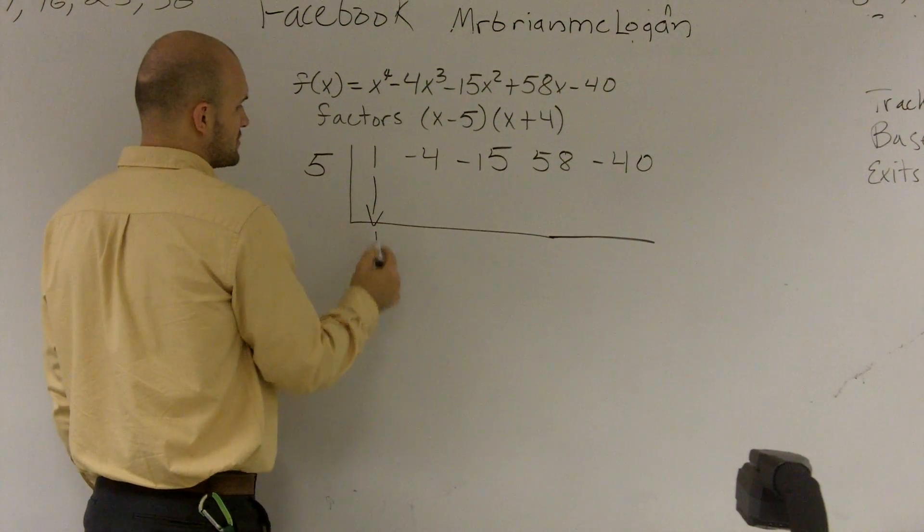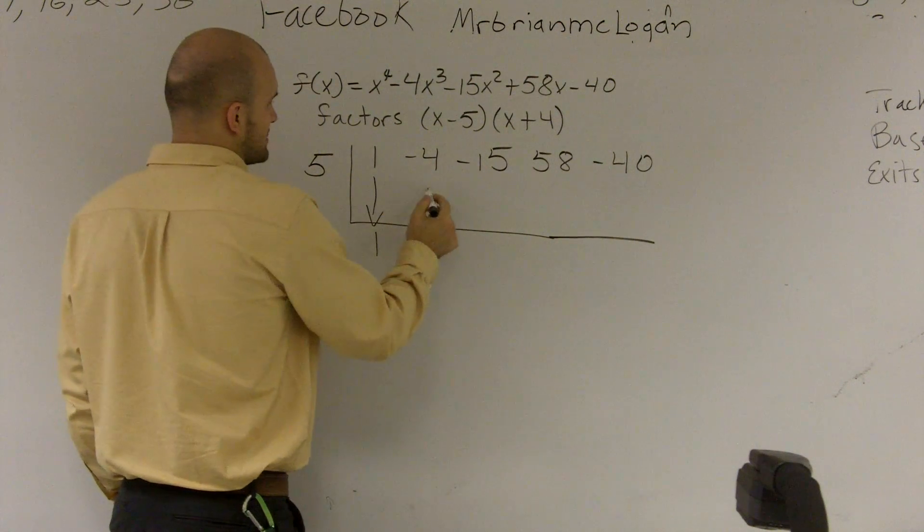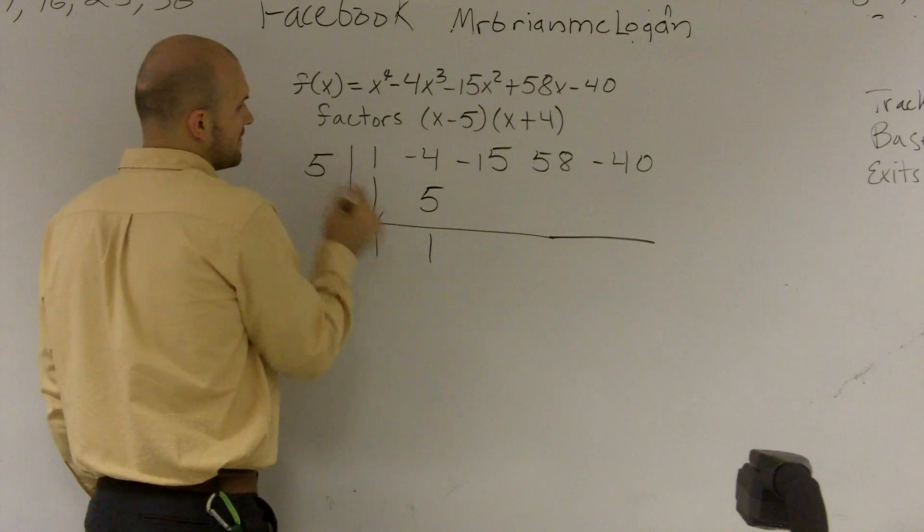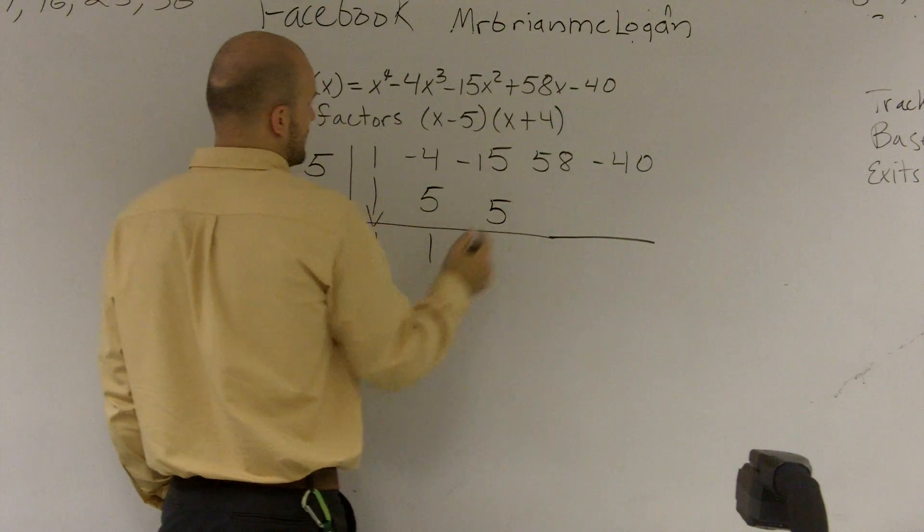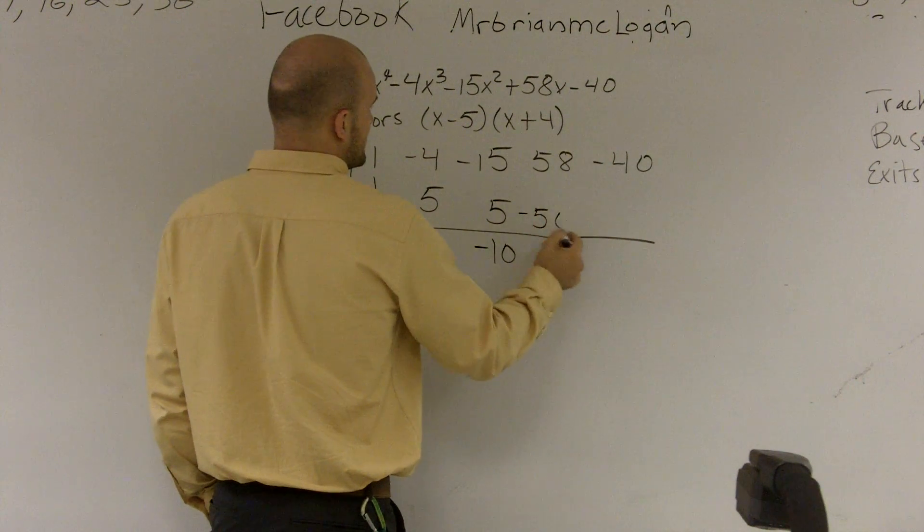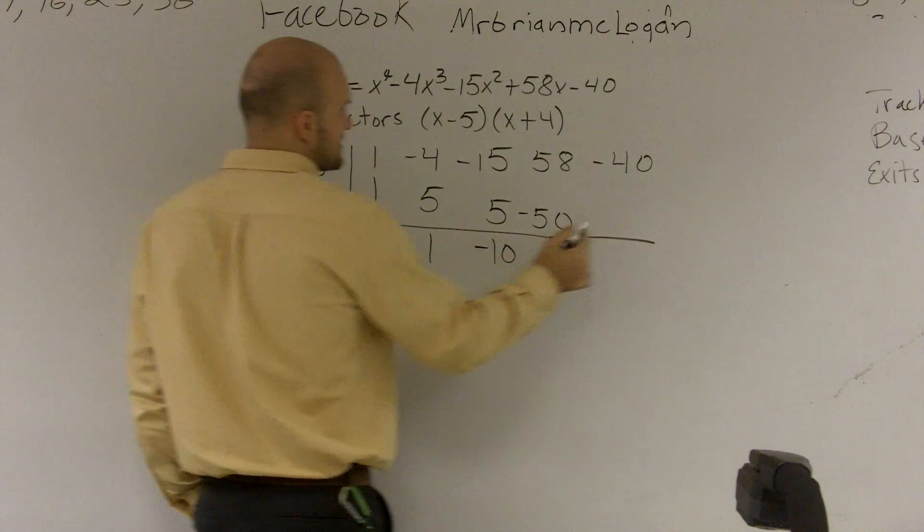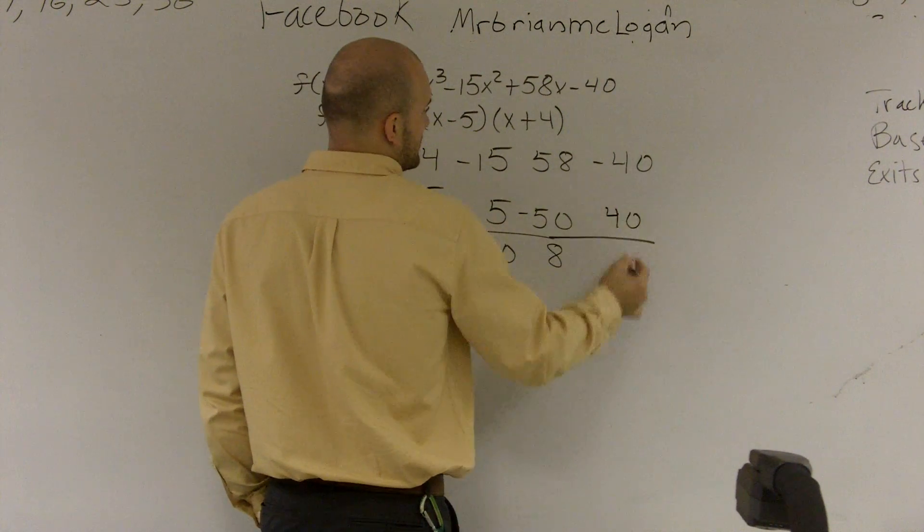First thing I do is drop down my first number, which is a 1. 5 times 1, then I multiply across. 5 times 1 is 5, which gives me 1. 5 times 1 is 5, which gives me a negative 10. 5 times negative 10 is a negative 50, which gives me now a positive 8. 5 times 8 is 40, gives me a 0.